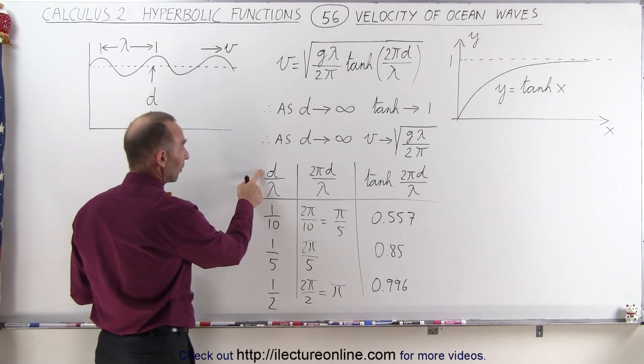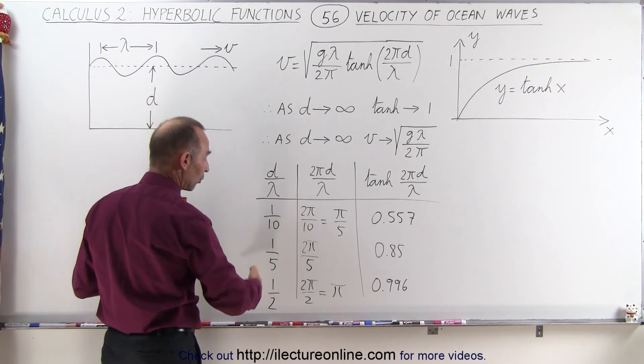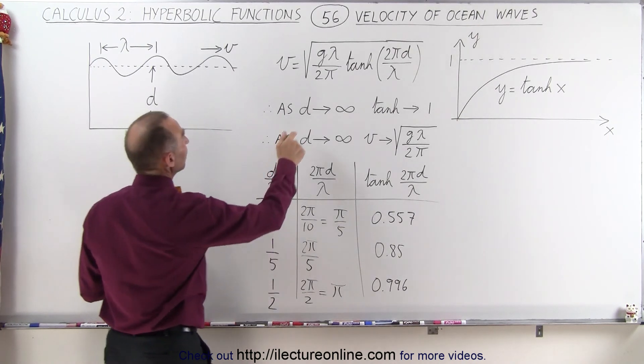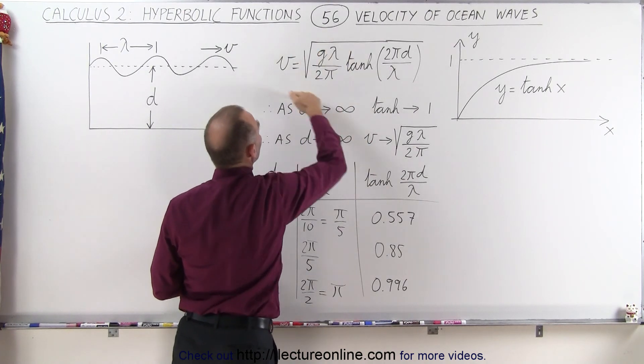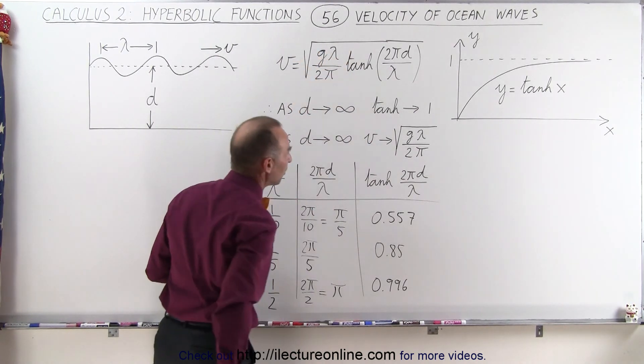In other words, once the depth becomes 1 half the wavelength or larger, so that the ratio is 1 half, then you can see that the velocity really becomes equal to the square root of g times lambda divided by 2π.